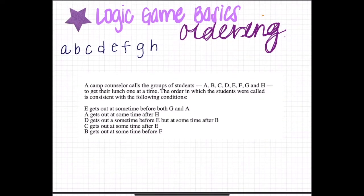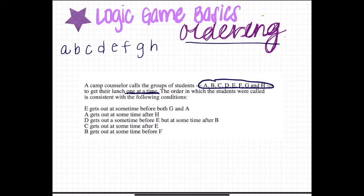A camp counselor calls groups of students A, B, C, D, E, F, G, and H — eight groups total — to get their lunch one at a time. That 'one at a time' is a hint that we're going to be putting these in order, because they go one after another. The order is consistent with the following conditions.